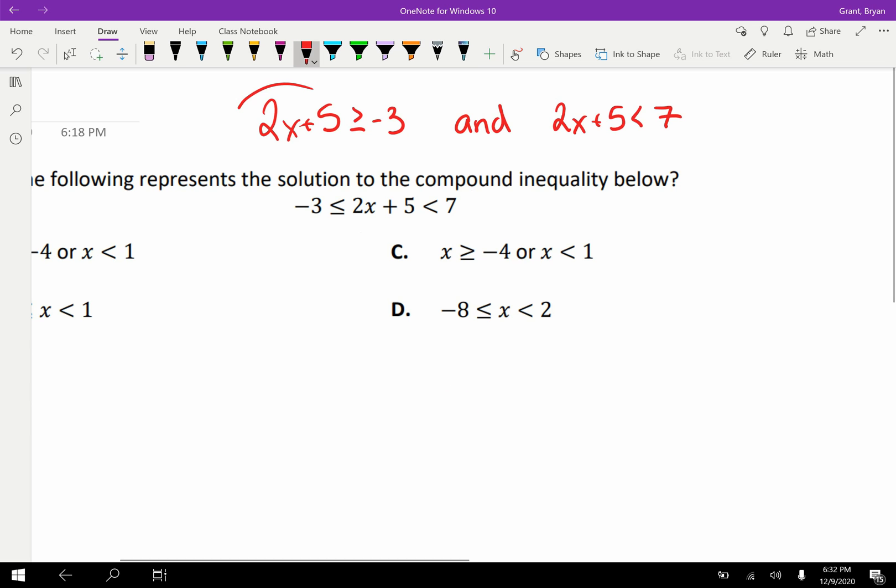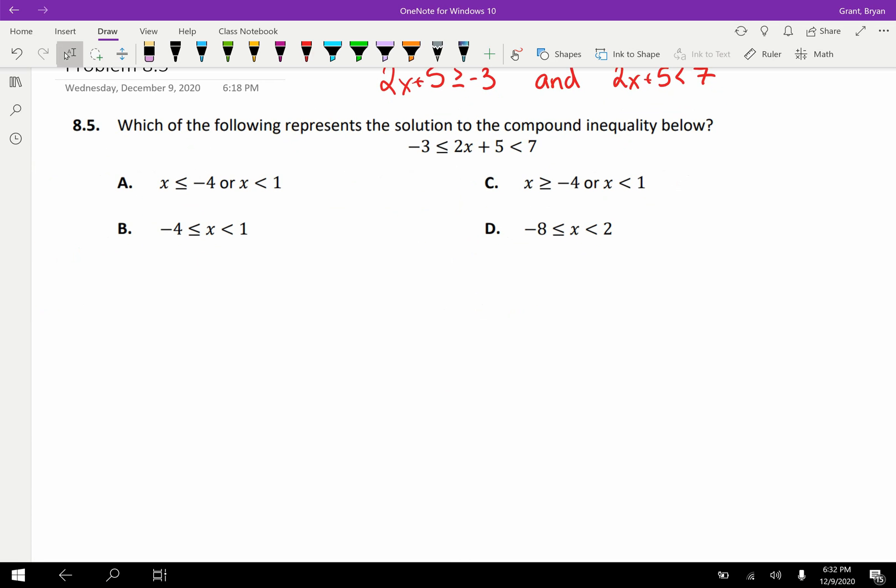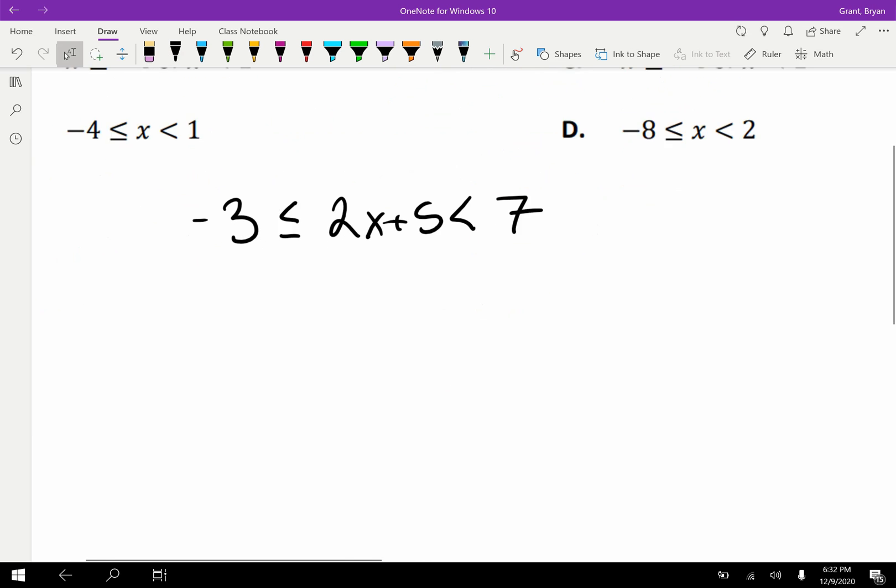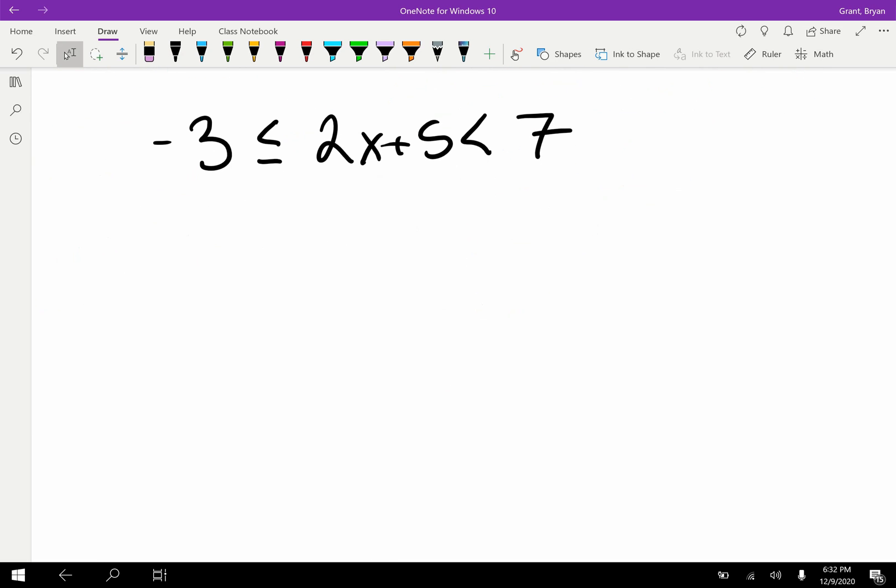We are trying to find an x value that makes 2x plus 5 greater than negative 3 or equal, and at the same time, also less than 7. It's been written in the form that we want, which is this one single compound inequality, so I'm going to rewrite it down here. We should think of this compound inequality as having three sides. We have one side over here, a second side in the middle, and a third side on the right. Our goal is to keep all three sides equally balanced. Whatever we do to one side, we have to do to all of the sides.